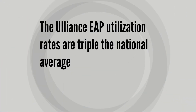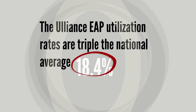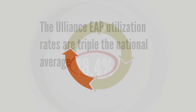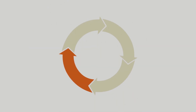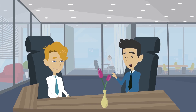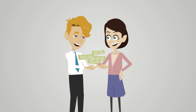The Uliance EAP utilization rates are triple the national average at 18.4%, and the resolution EAP model manages and resolves 94% of employees and their families' issues within the EAP. High utilization avoids expensive health care claims costs and out-of-pocket expenses for employees.